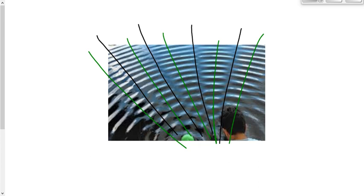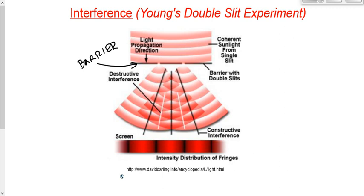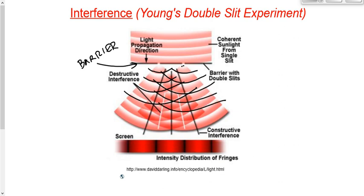If I had light going through two openings instead of water waves, what would I see? At the top of this diagram you see a barrier with two openings. There are red light waves going towards that barrier, and those two openings allow light waves through. The light going through the first opening diffracts — it spreads out like the water waves did. The light going through the second opening also diffracts and spreads out.